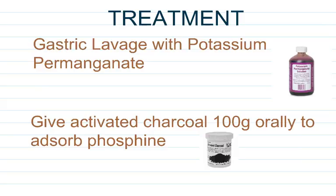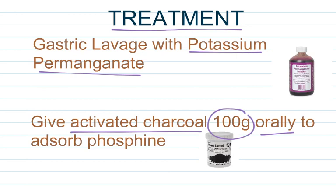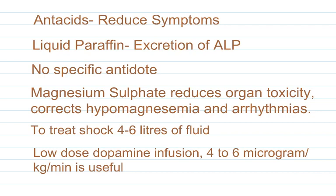Let's talk about the treatment. Gastric lavage with potassium permanganate is done 2-3 times to oxidize the poison. Give activated charcoal 100 grams orally to adsorb phosphine. Antacids reduce symptoms pertaining to the stomach and reduce absorption of phosphine. Liquid paraffin is given for excretion of aluminium phosphide and phosphine from the gut. Note that there is no specific antidote for this.